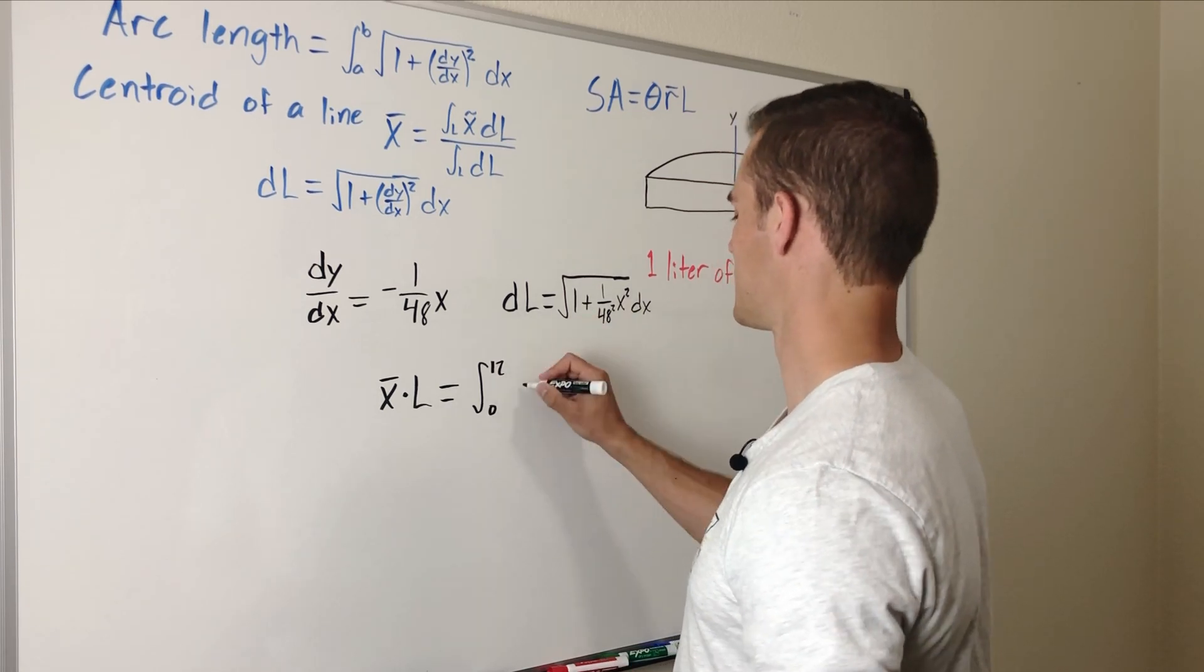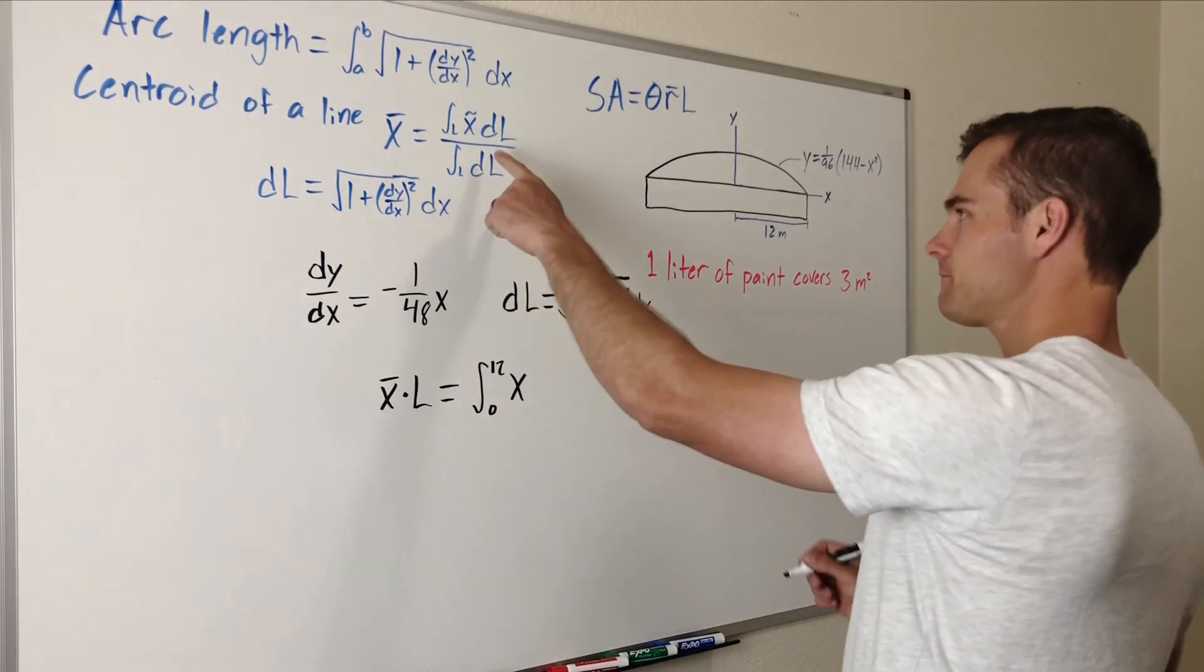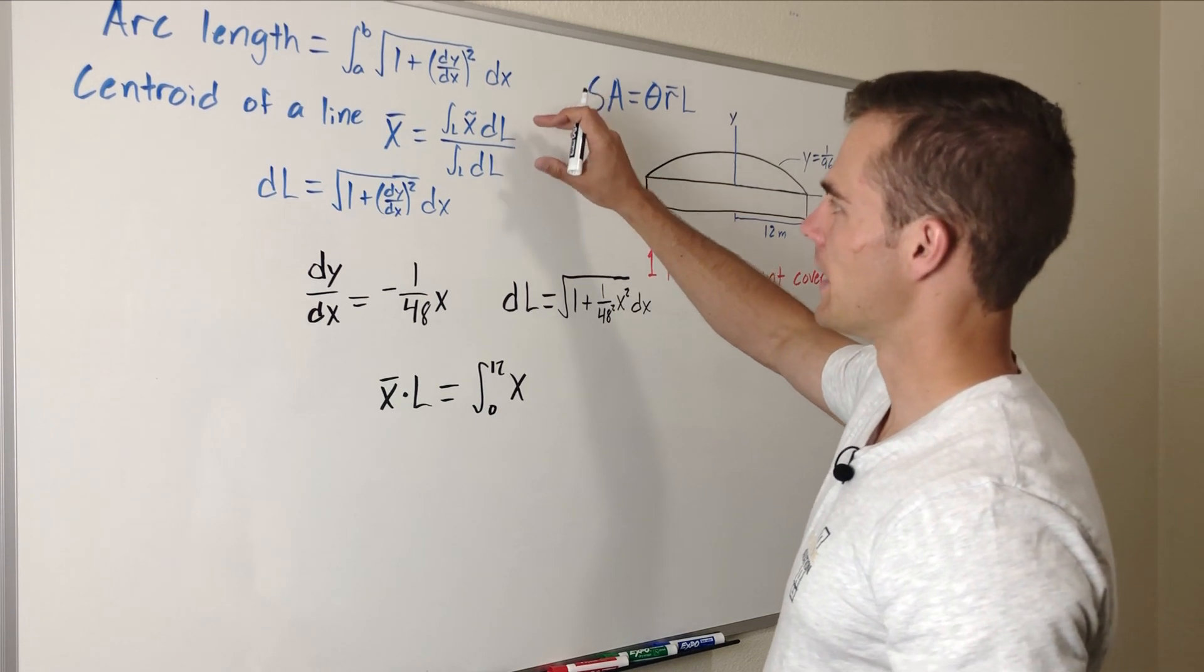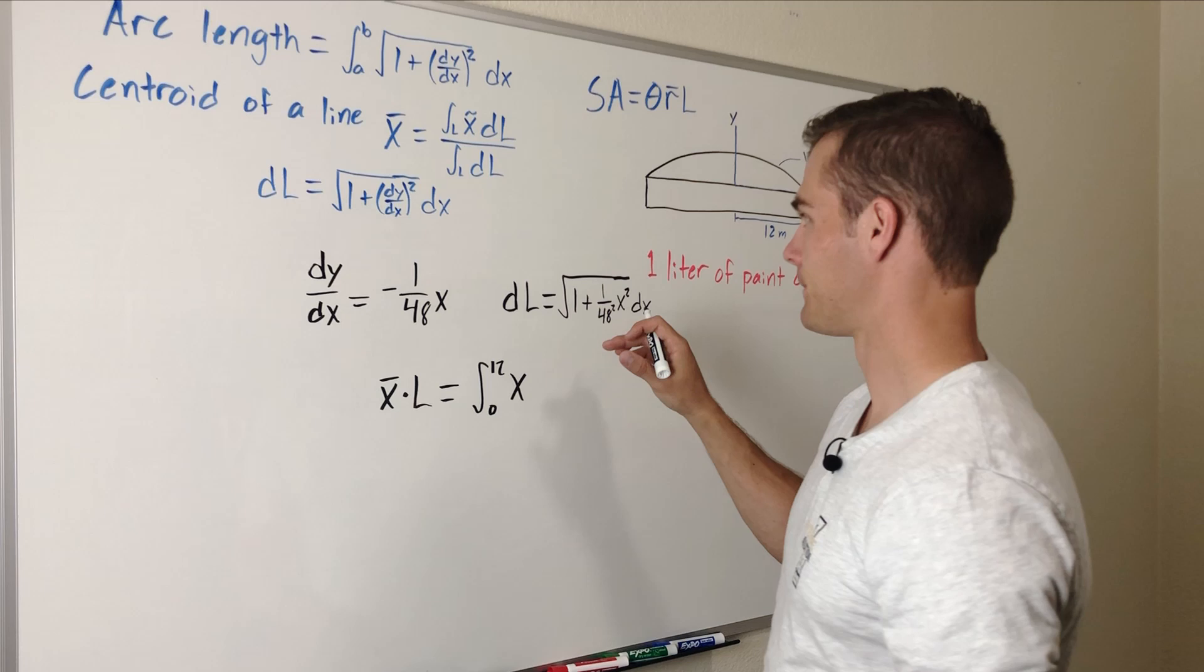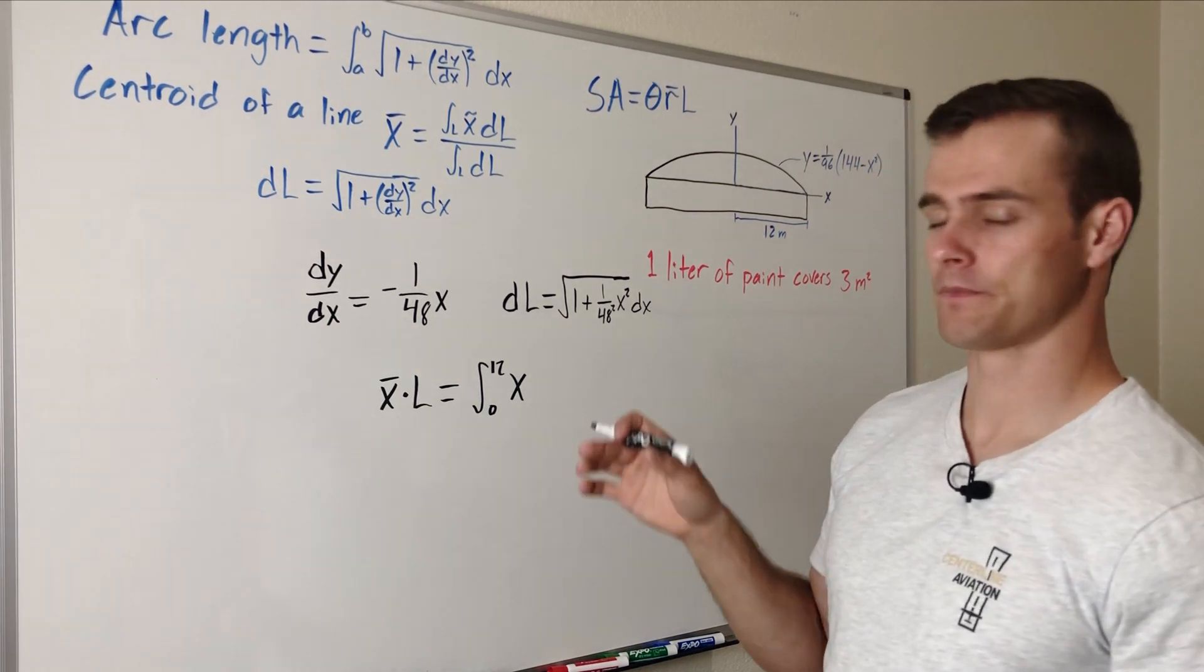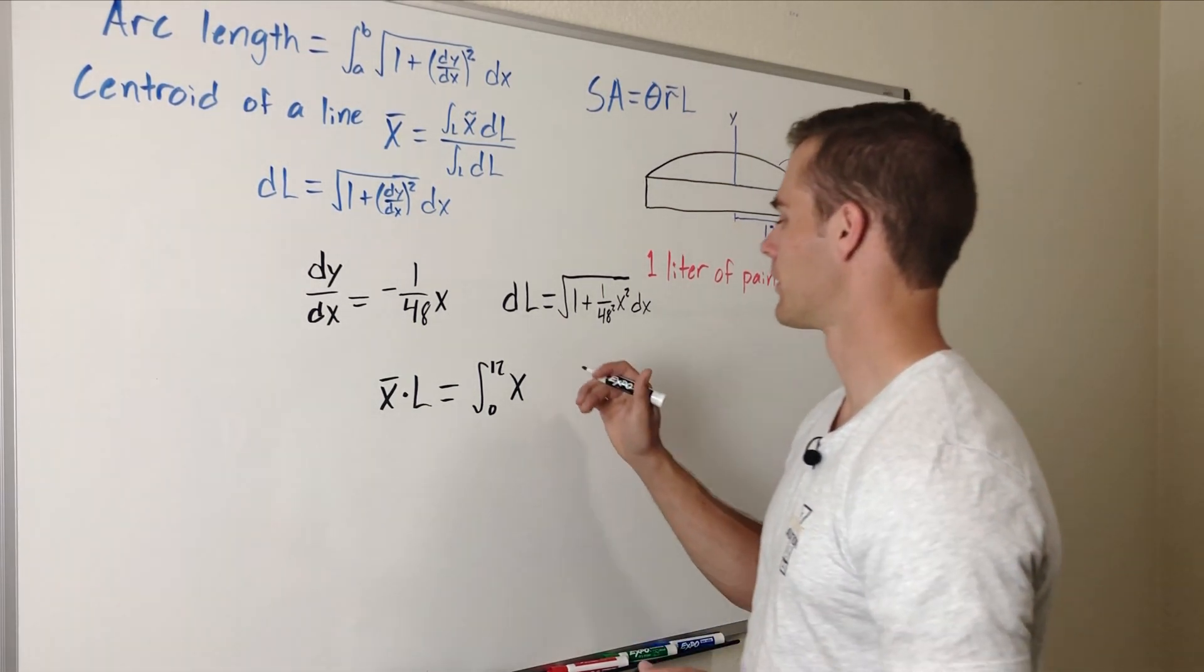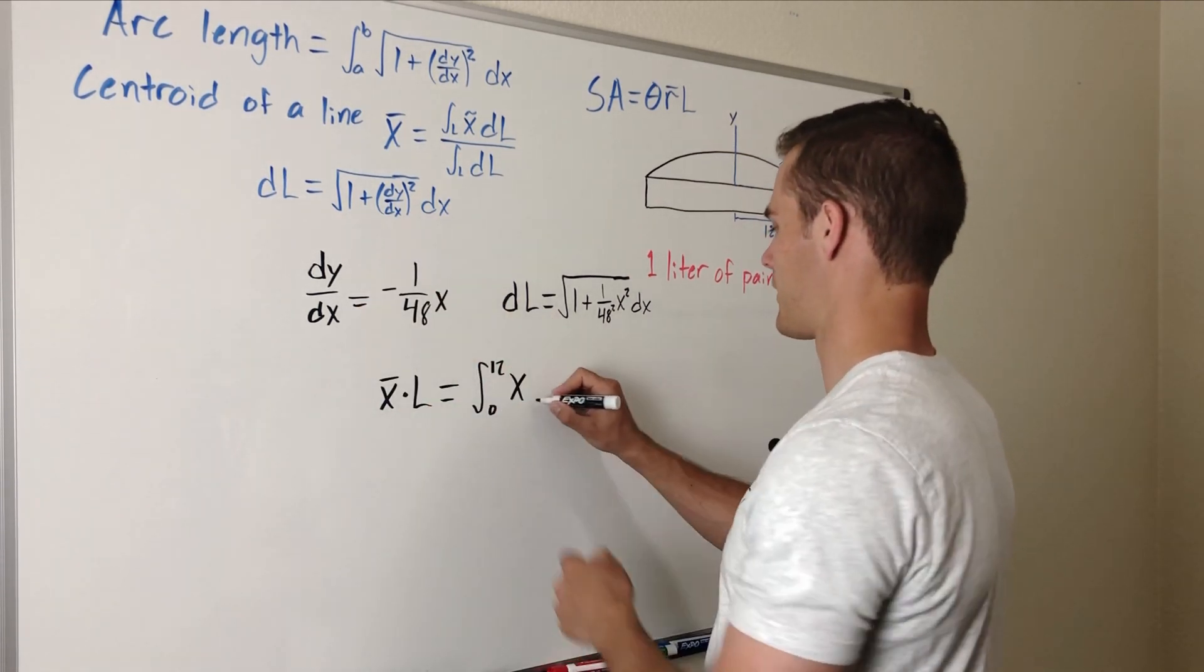x tilde is just x because it is the centroid of each differential piece dL. So it's just going to be x because we're integrating with respect to x. If you want a little bit more explanation on that you can go to that video that I referenced earlier. And then so you multiply this by dL which we have here.